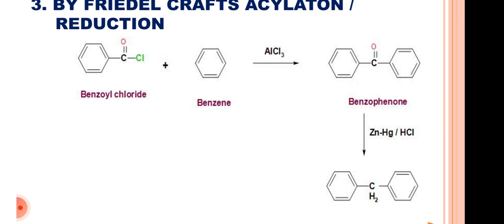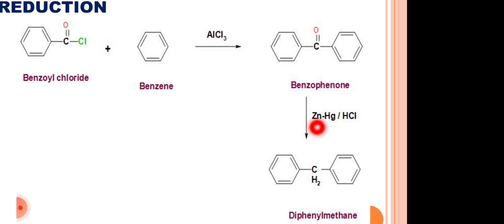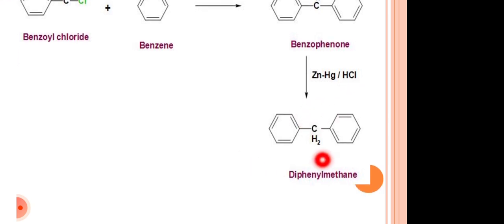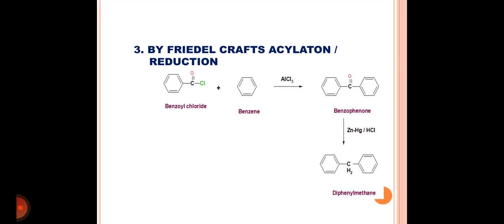Thus we get the formation of benzophenone. The benzophenone, on reaction with zinc amalgam in the presence of hydrochloric acid, liberates a molecule of zinc oxide, and with the attachment of protons from hydrochloric acid, the desired compound diphenylmethane is obtained. So these three are the syntheses of diphenylmethane.